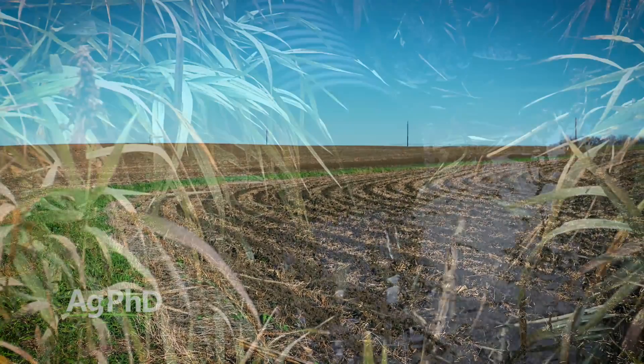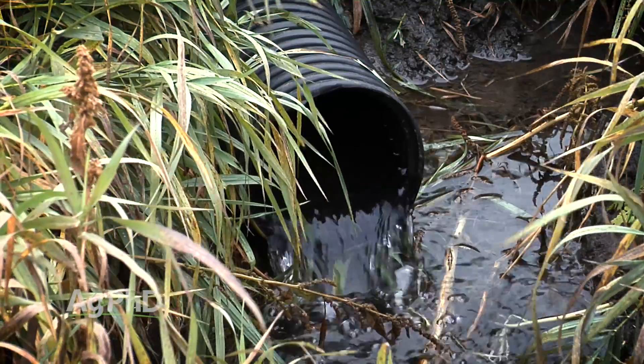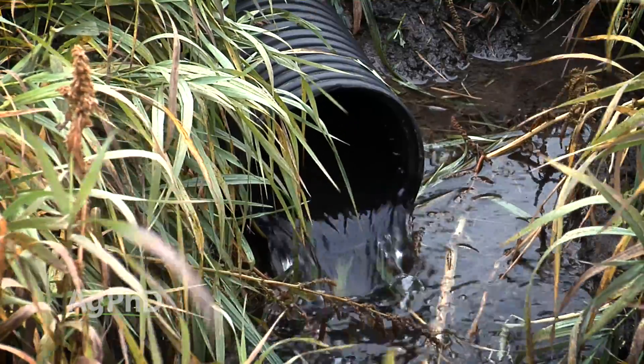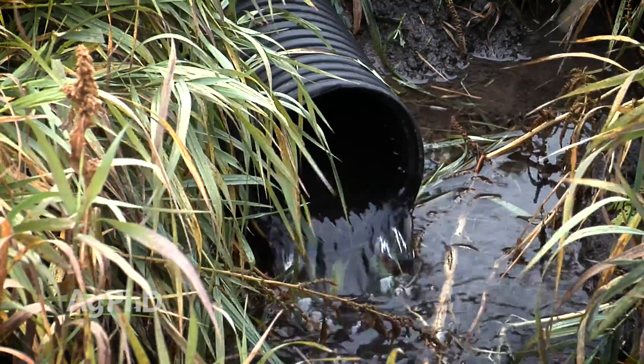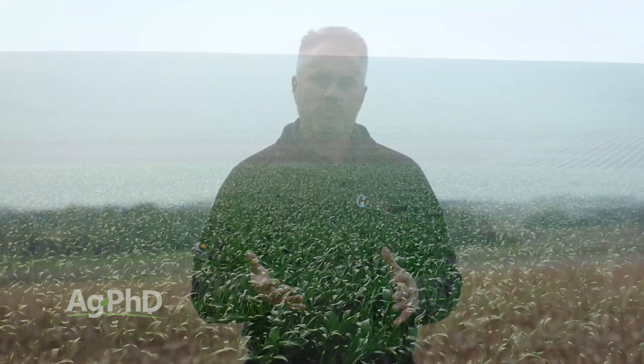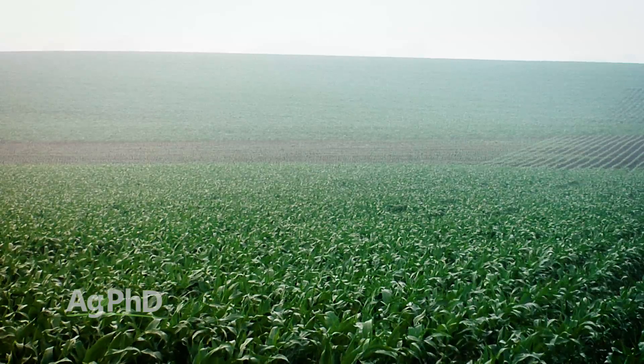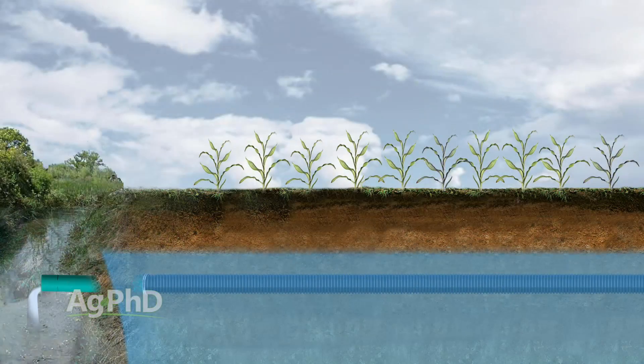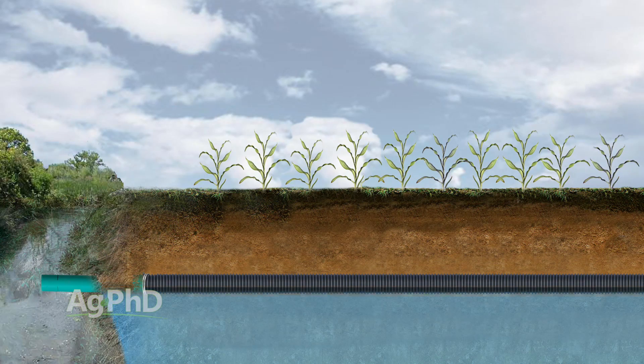In addition to having tile in the ground — a lot of people say, well I don't need grass waterways anymore, I have tile in the ground. That reduces the amount of water running across the field, and they're right in that respect. But what the grass waterway is really there for is for a big rain. What tile is really there for is to lower the water table. So it's two different purposes.